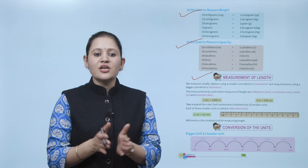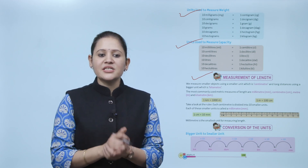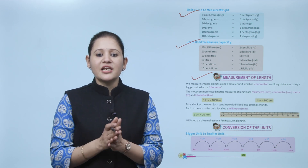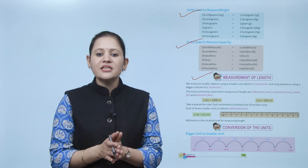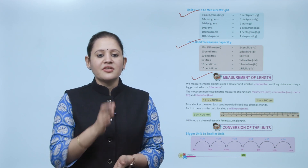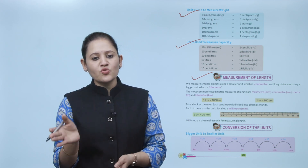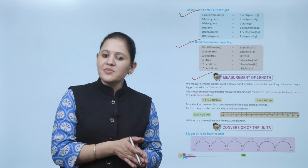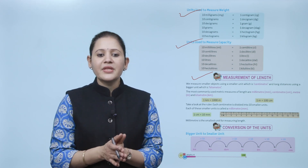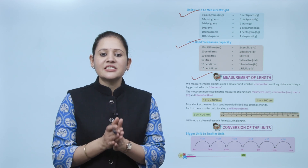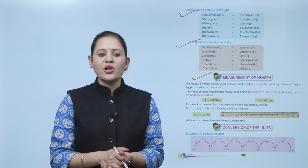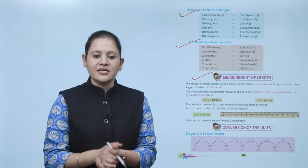Measurement of length: we measure smaller objects using the smaller unit — centimeter — and long distances using a bigger unit — kilometer. The most commonly used metric measures of length are millimeter, centimeter, meter, and kilometer. One kilometer equals 1000 meters; one meter equals 100 centimeters. Take a look at the ruler — each centimeter is divided into 10 smaller units, and each of these smaller units is called a millimeter.